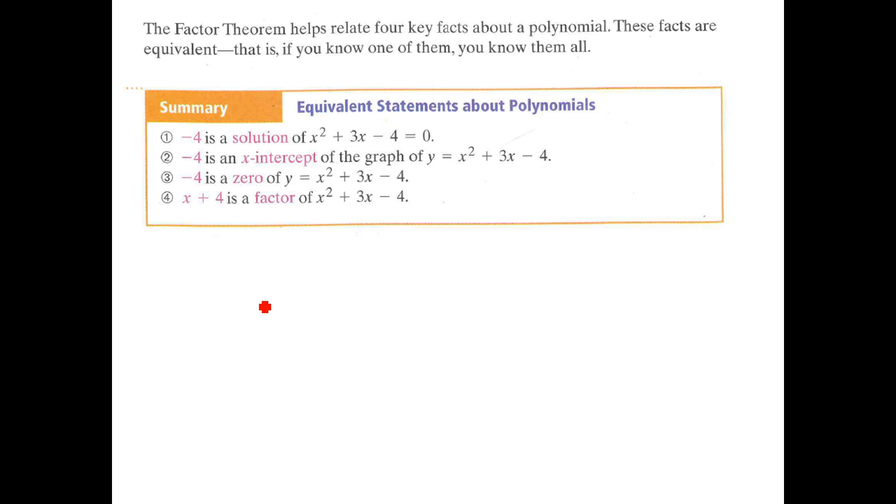Big summary here. Equivalent statements about polynomials. Negative four is a solution. Negative four is an x-intercept. Negative four is a zero. x plus four, the opposite of the negative four, negative four is a factor. These are four ways of saying the exact same thing. So we're always looking for the x-intercepts. One, two, and three. These are called the solutions or the zeros, and the opposite will be the factor. That's it. Good luck with that. Good luck with those problems, and we'll see you in class next time.